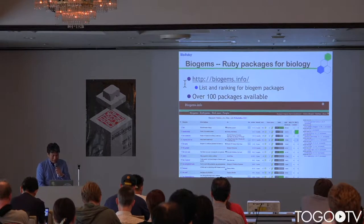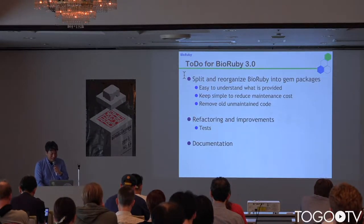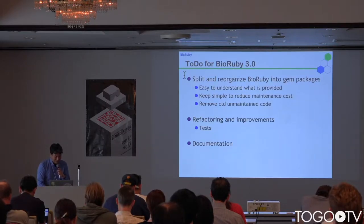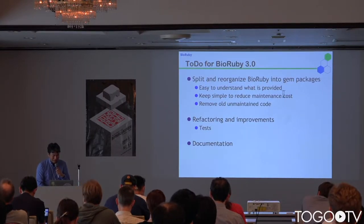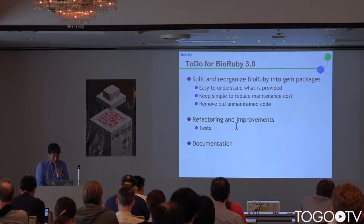Over hundreds of packages are now available. For the next BioRuby version, maybe BioRuby 3.0, I'd like to split and reorganize BioRuby into some gem packages. It will be easy to understand what is provided and keep things simple to reduce maintenance costs. I'd also like to remove all the unmaintained code, and do refactoring, including writing tests and documentation.